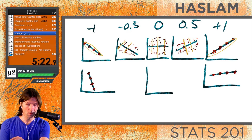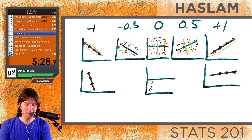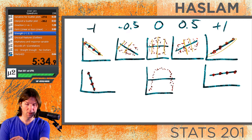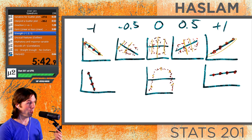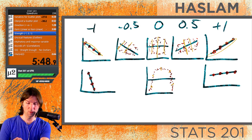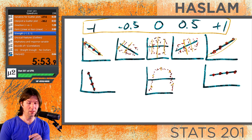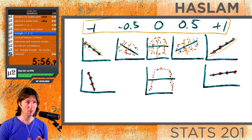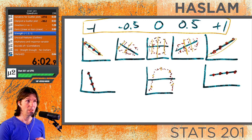A unique case is the parabola: it has zero linear strength, but there is still a strong association that is nonlinear. The bands around the parabolic association are very tight, showing a strong nonlinear pattern. Negative one to one measures only linear strength — if you have a nonlinear relationship like a parabola, correlation won't measure that well.